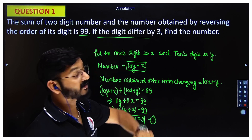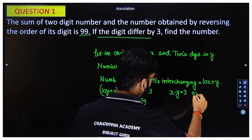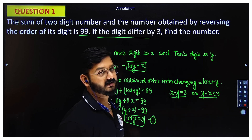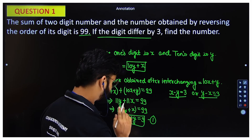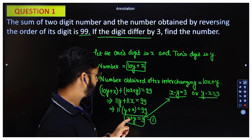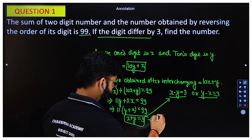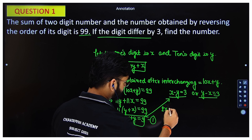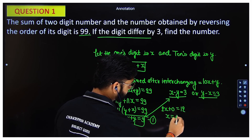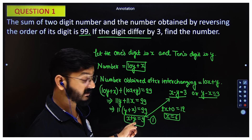Both possibilities are there. First, I'll solve case one: x minus y equals 3, and x plus y equals 9. Adding both equations: 2x equals 12, so x equals 6. If x is 6, substituting back: 6 plus y equals 9, so y equals 3.